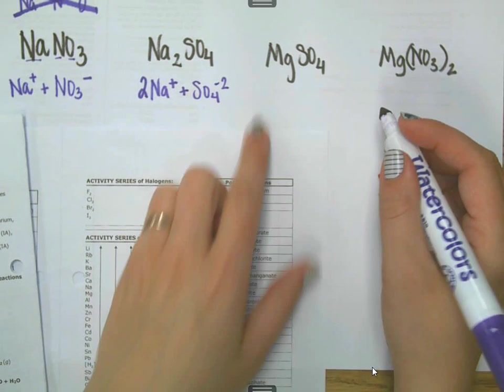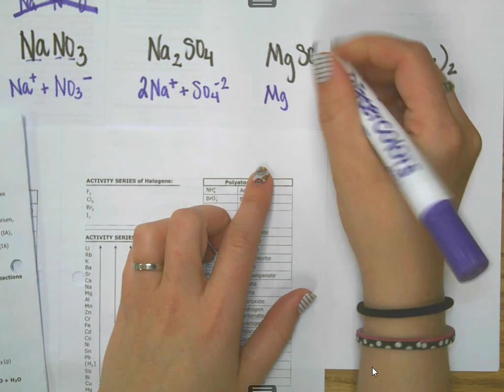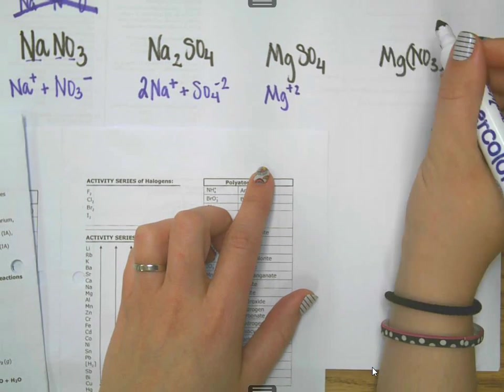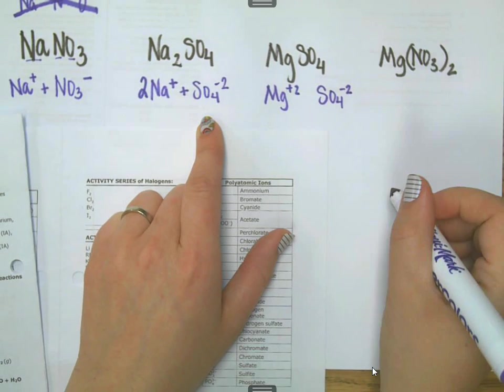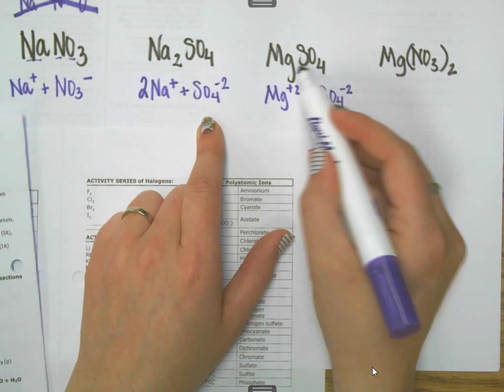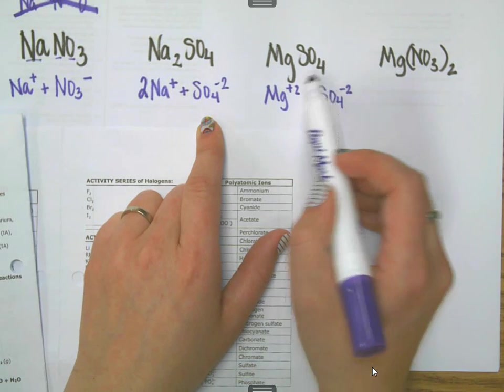MgSO4. We were using Mg earlier. Mg is a plus two. Sulfate we just did. It's SO4 negative two. There's no extra coefficients or no extra subscripts. I'm sorry.